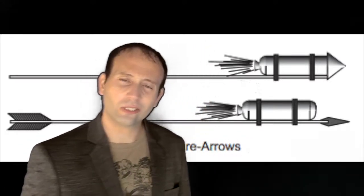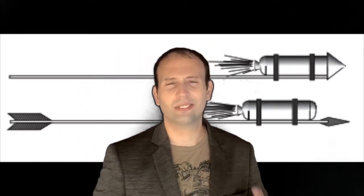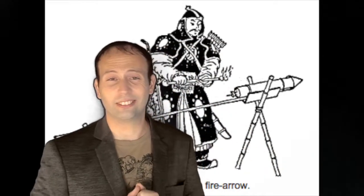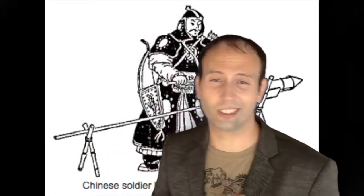A tube, capped at one end, contained gunpowder. The other end was left open and the tube was attached to a long stick. When the powder ignited, the rapid burning of the powder produced fire, smoke, and gas that escaped out the open end and produced a thrust. The stick acted as a simple guidance system